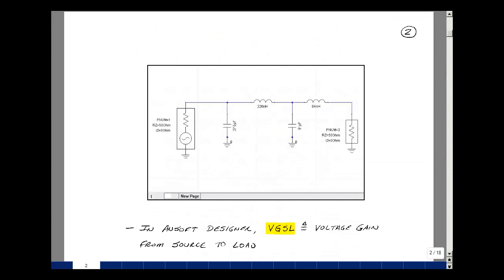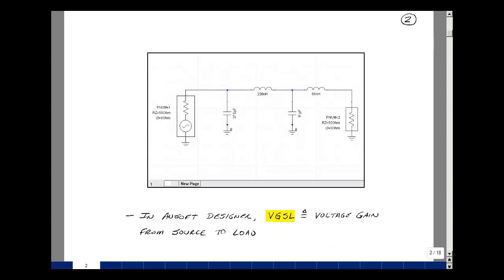I've laid out the circuit in Ansoft Circuit Designer, showing my Butterworth filter, and then my 50-ohm load and 50-ohm source impedance. I want to show what the voltage transfer function looks like. In Ansoft Designer, there is a command called VGSL, which stands for the voltage gain from source to load. And this is what the transfer function looks like.